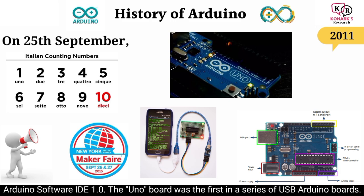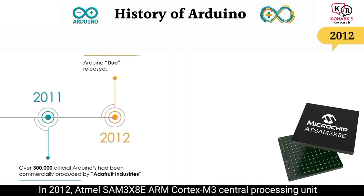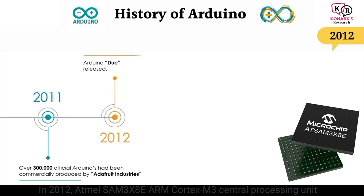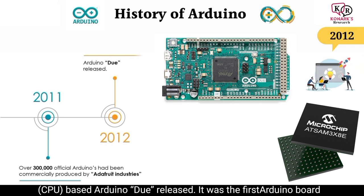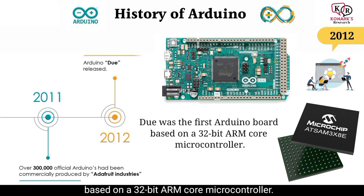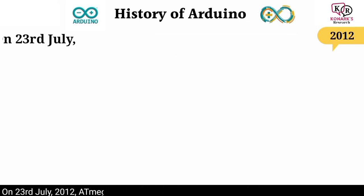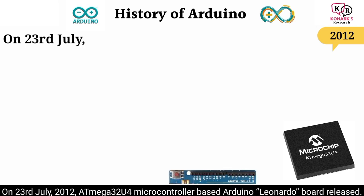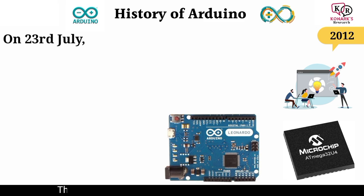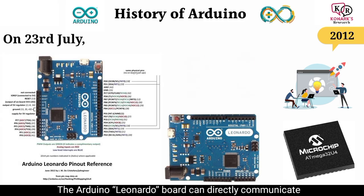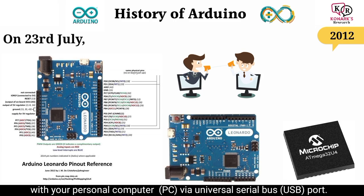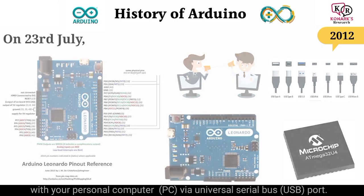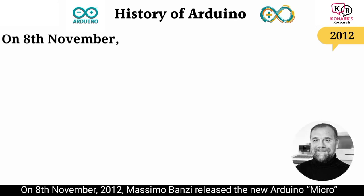The Uno board was the first in a series of USB Arduino boards. In 2012, the ATMEL SAM3X8E ARM Cortex-M3 CPU-based Arduino Due was released — the first Arduino board based on a 32-bit ARM core microcontroller. On 23 July 2012, the ATmega32U4 microcontroller-based Arduino Leonardo board was released. The Arduino Leonardo board can directly communicate with a personal computer (PC) via USB port.